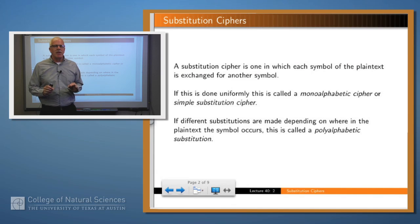So what is a substitution cipher? It means that you take each symbol in the plain text and exchange it for another symbol. And if this is done uniformly, meaning that you replace all the A's by the same symbol throughout and all the B's by the same symbol throughout, then it's called a monoalphabetic cipher or a simple substitution cipher.